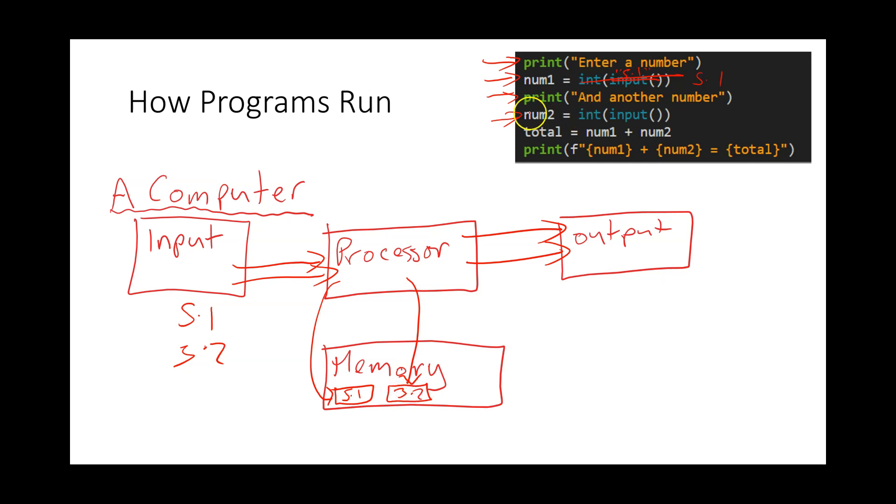Now the next line says total is num1 and num2. So the processor actually has to read back in num1 as 5.1, num2 as 3.2, and it adds them together and it gets 8.3.